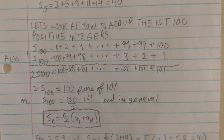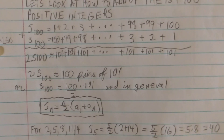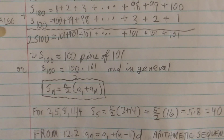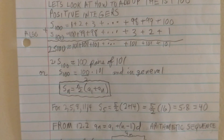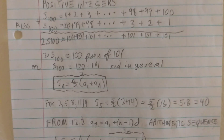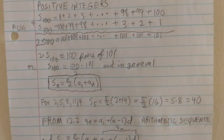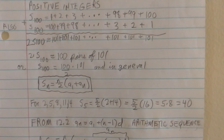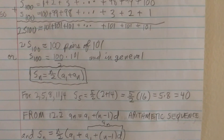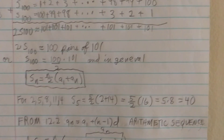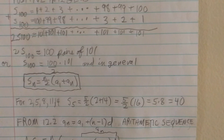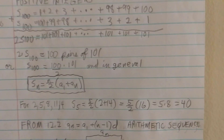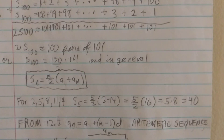Now let's look at how to sum up the first 100 positive integers. This is done in a very clever way by writing S sub 100 as 1 plus 2 plus 3 plus dot dot dot all the way up to 98 plus 99 plus 100, and then also adding that to the same thing written backwards: 100 plus 99 plus 98 plus dot dot dot down to 3 plus 2 plus 1. You'll see that if we add each corresponding term, 1 plus 100 is 101, 2 plus 99 is 101, 3 plus 98 is 101 — each pair adds up to 101, because we're going up by one on the top but down by one on the second series.